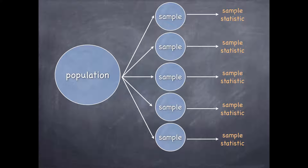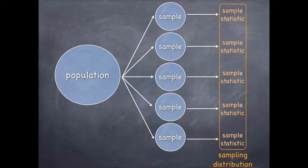We would expect these to be somewhat similar to each other if our sampling scheme is good and our sample size is sufficiently large, but we would not expect them to be exactly the same. The distribution of these sample statistics is basically what we call the sampling distribution. On the other hand, the distribution of the observations from within each sample is what we call the sample distribution.